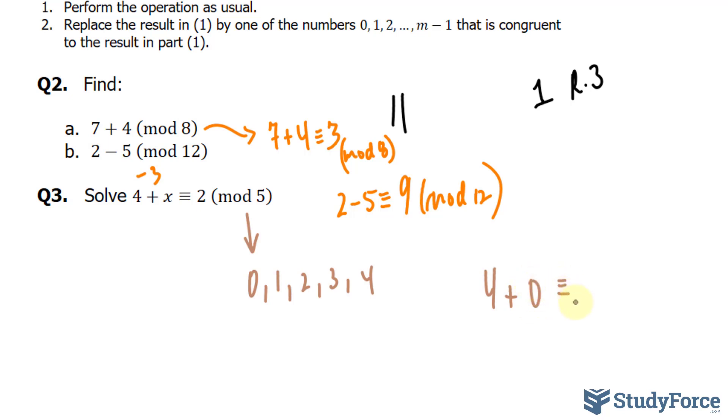So if I write down 4 plus 0, that's equal to 4. It is not congruent to 2, so that's false. Our next x value is 1. So I'll write down 4 plus 1 is congruent to 2. Is this true or false? Well, 4 plus 1 is 5. 5 fits into 5 once with no remainder. So this is not true, it should be 0.